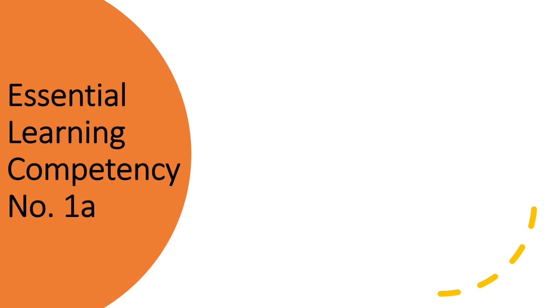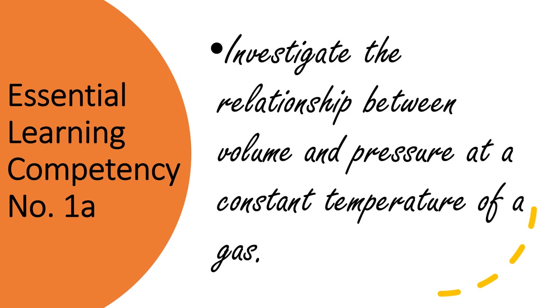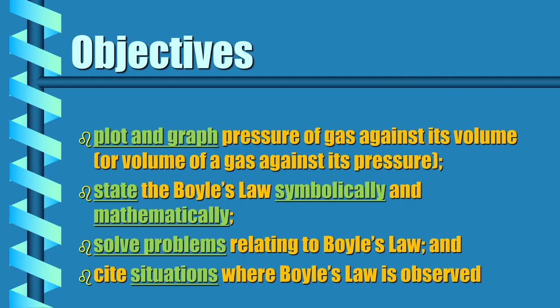Our essential learning competency for this video lesson is to investigate the relationship between the volume and pressure of a gas at constant temperature. Our objectives are: first, to plot and graph the pressure of a gas against its volume; second, to state Boyle's Law symbolically and mathematically; third, to solve problems relating to Boyle's Law; and fourth, to cite real-world situations where Boyle's Law is observed.